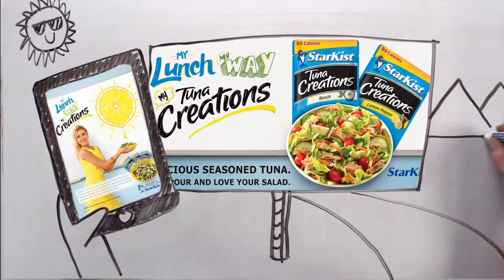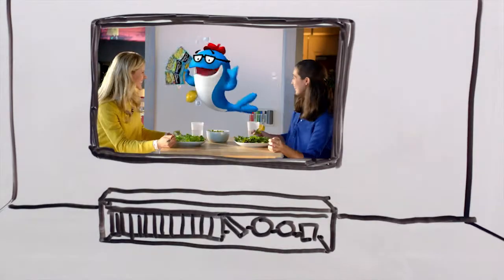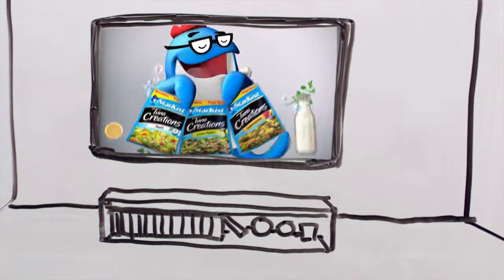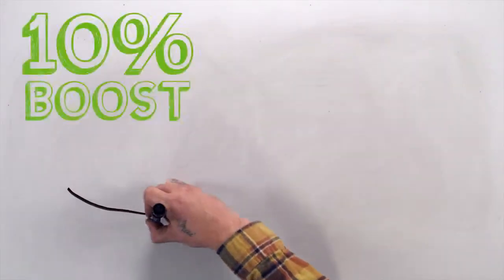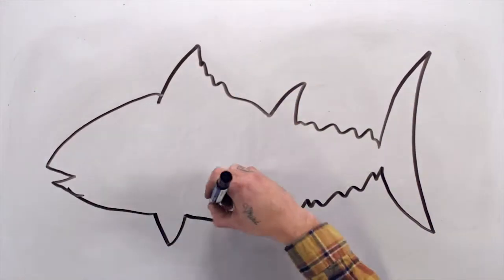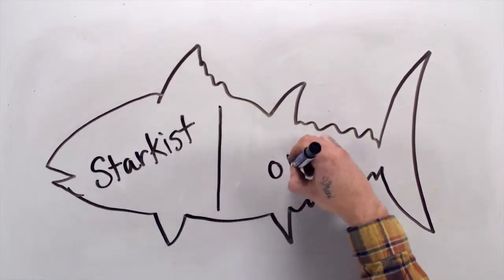Now the foundation of the entire StarKist brand. New school and new Charlie were everywhere. Tuna Creations sales rose 45% in just six months. All StarKist pouch products got a 10% boost. And the only tuna brand with sales growth in 2014 was, yep, StarKist.